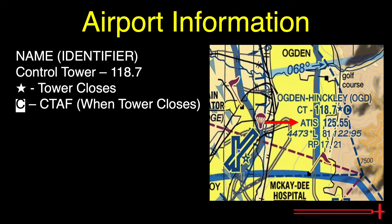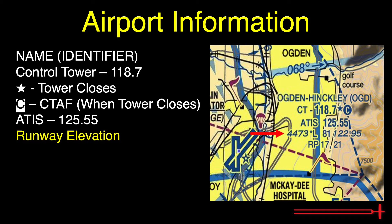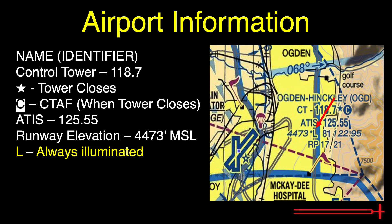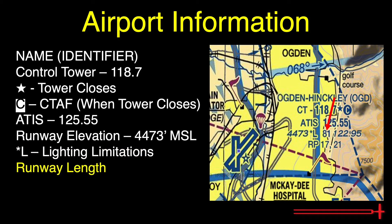Below the tower frequency, we have our weather reporting frequency. Ogden's ATIS frequency is 125.55. You may also see ASOS or AWOS here. Below that, we have runway information. First is the runway's elevation — Ogden's runway falls at 4,473 feet MSL. An asterisk before the L means runways are not lit 24/7; refer to the chart supplement for lighting limitations. An L without the asterisk depicts runways lit 24/7. The small number is the length of the longest runway in hundreds of feet — here, an 8,100-foot runway. Note this number does not only include usable runway; refer to the chart supplement for usable runway length comparisons.